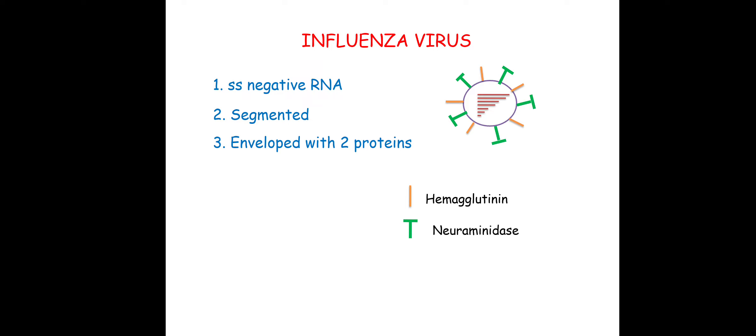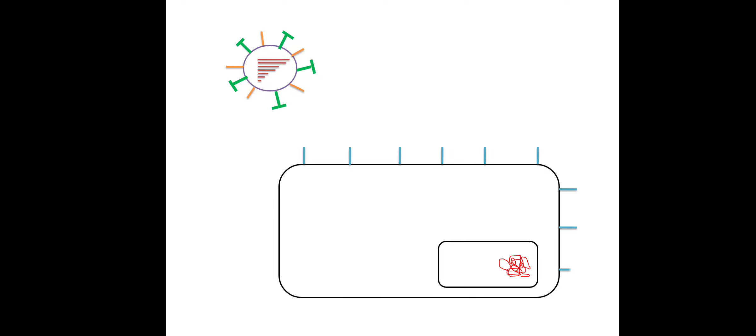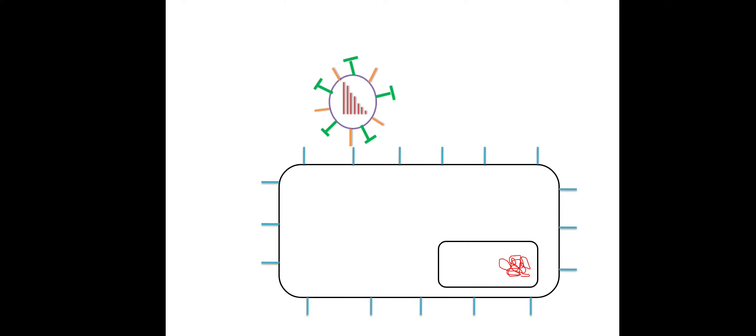Let us talk about how influenza infection works. Suppose you get exposed to this virus via a respiratory droplet and it infects the epithelial cells in the upper respiratory tract. These epithelial cells have a surface protein called sialic acid. The hemagglutinin of the virus will bind with the sialic acid of our epithelial cells.